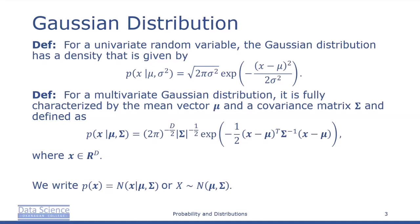Gaussians are used widely in statistical estimation and machine learning as they have nice closed-form expressions for marginal and conditional distributions. In particular, we use these closed-form expressions extensively when we study linear regression. A major advantage to modeling with Gaussian random variables is that variable transformations are often not needed, since we can often obtain the transformed distribution by applying the transformation to the mean and covariance.